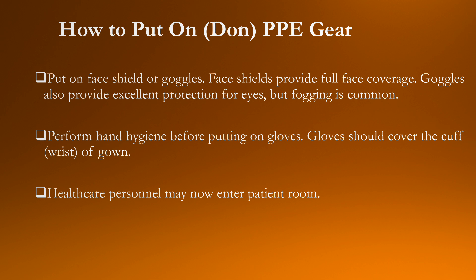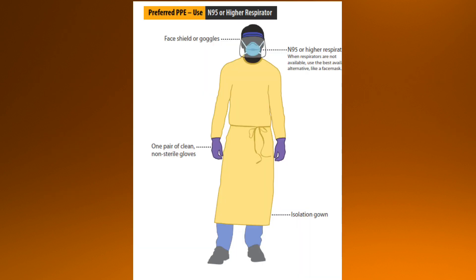The third item to put on is the goggles or face shield. So the sequence is: isolation gown first, then the N95 mask or surgical mask, then the face shield or goggles. Perform hand hygiene, then put on the gloves — gloves must cover the cuff of the isolation gown. If performing an aerosol-generating procedure, add an apron over the isolation gown. Then you are ready to enter the patient room.